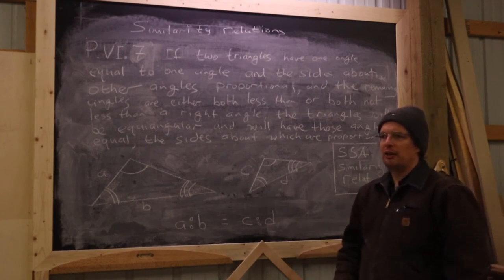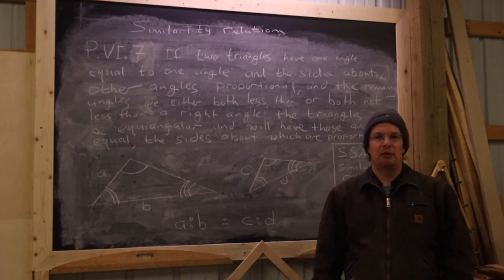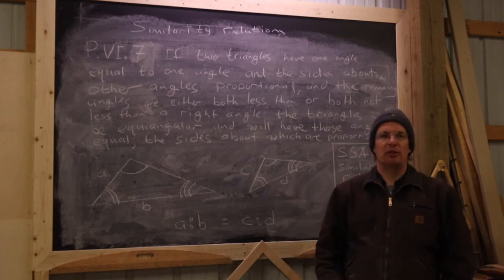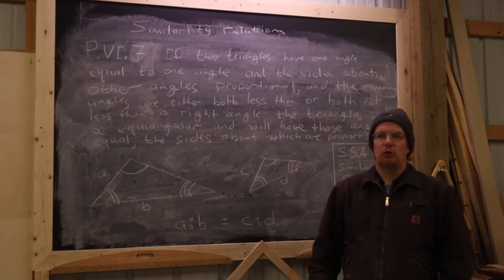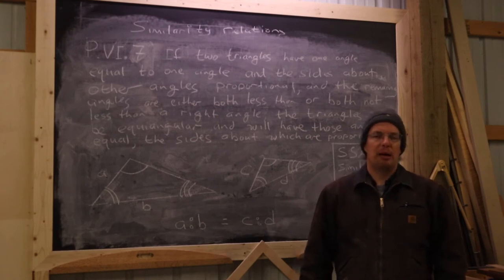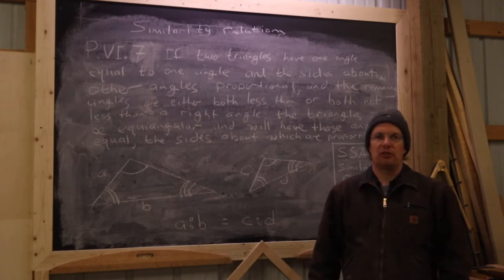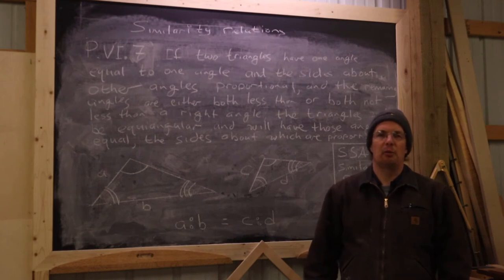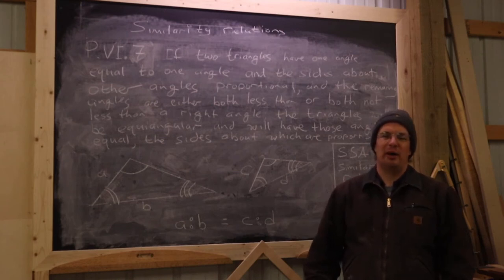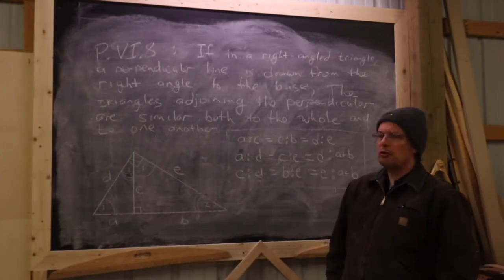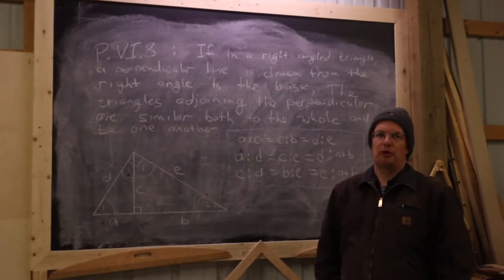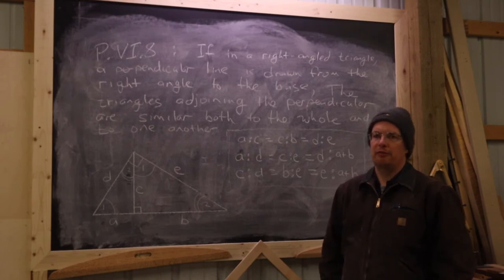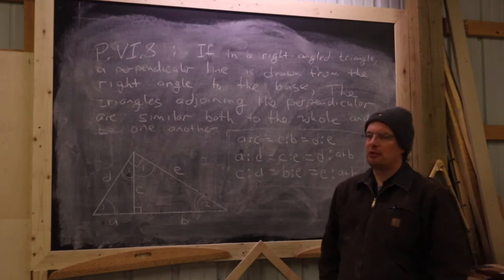There are other similarity relationships in Euclidean geometry, but we've stated the ones we're going to need. There are really only a couple more propositions from Book Six we need to look at before we can move on to understanding what the sector is, how it works, and why it works. Euclid's next relevant proposition is Proposition 8 of Book Six.